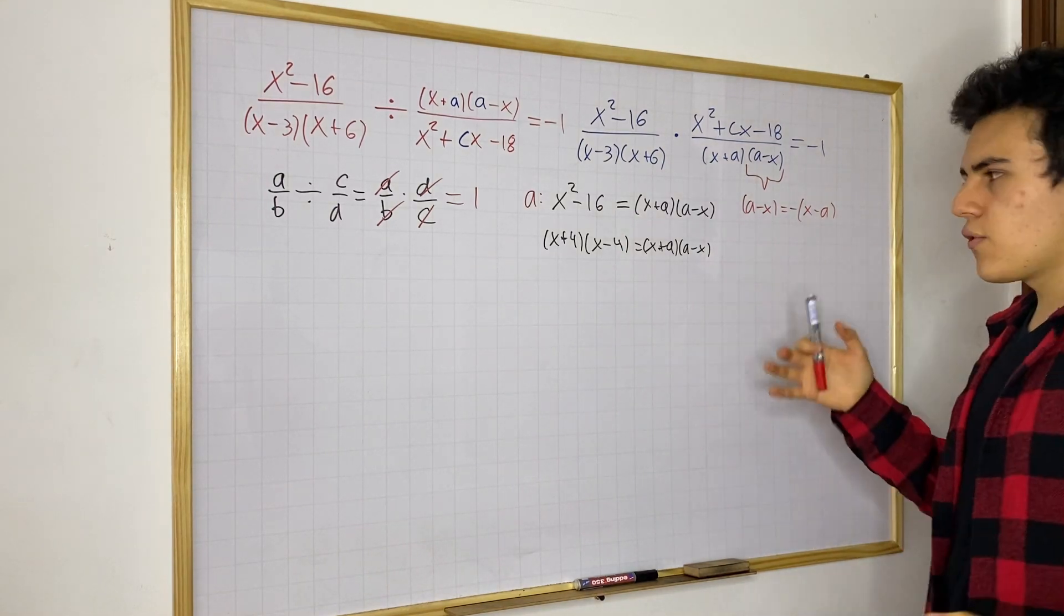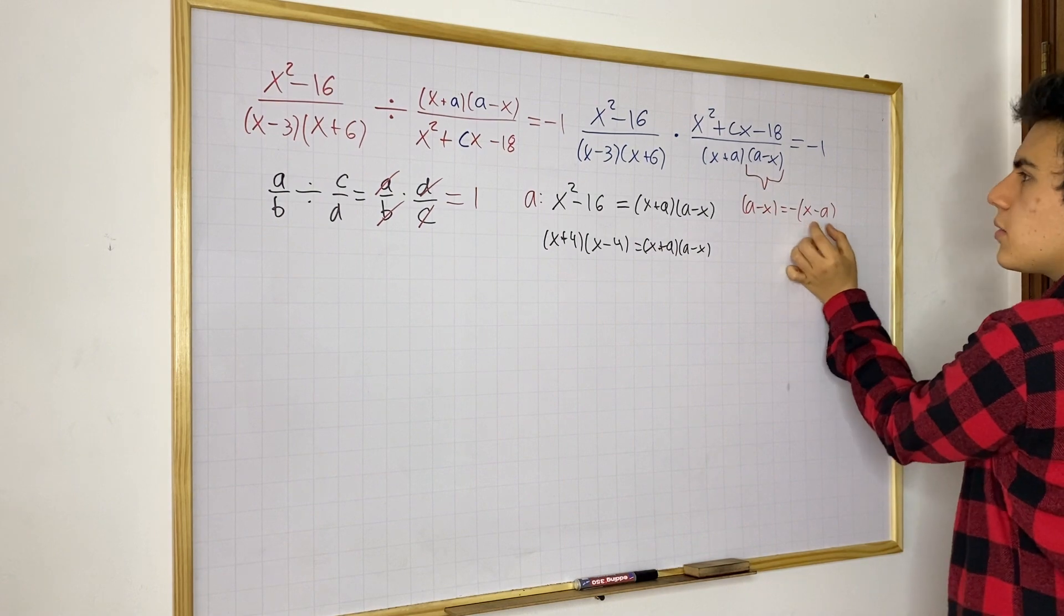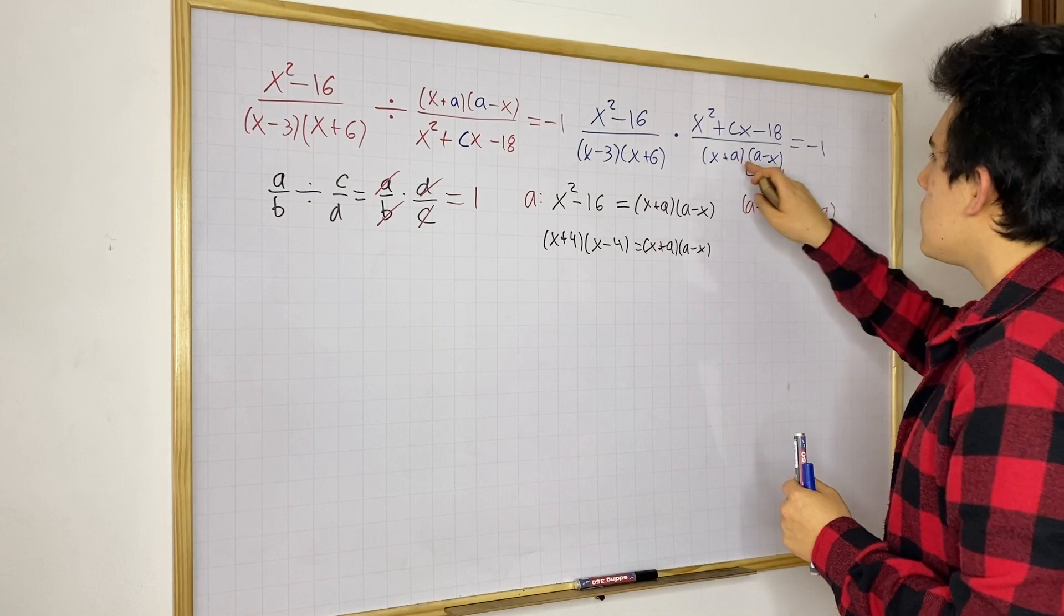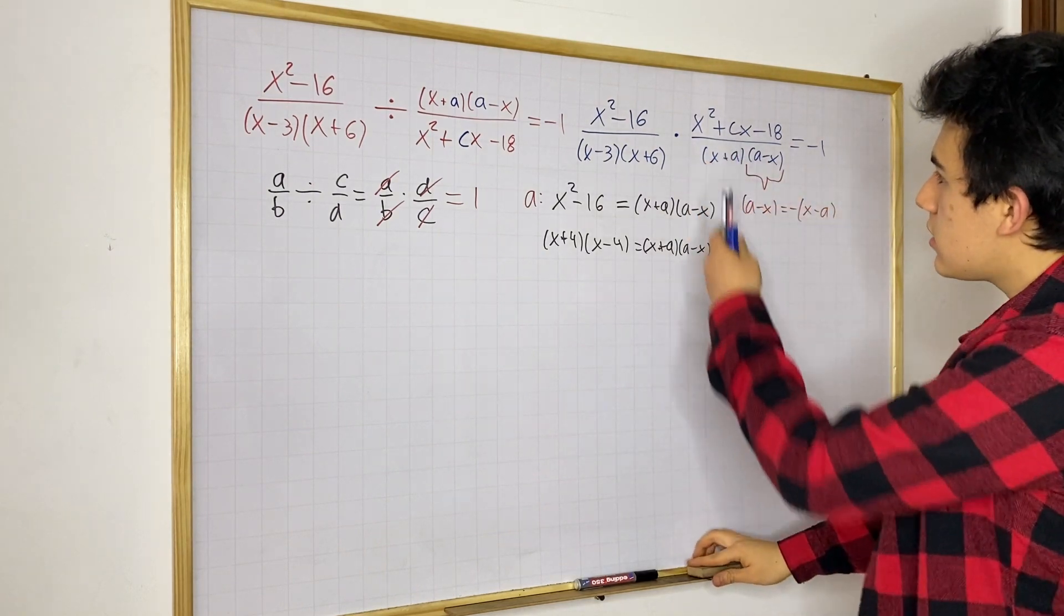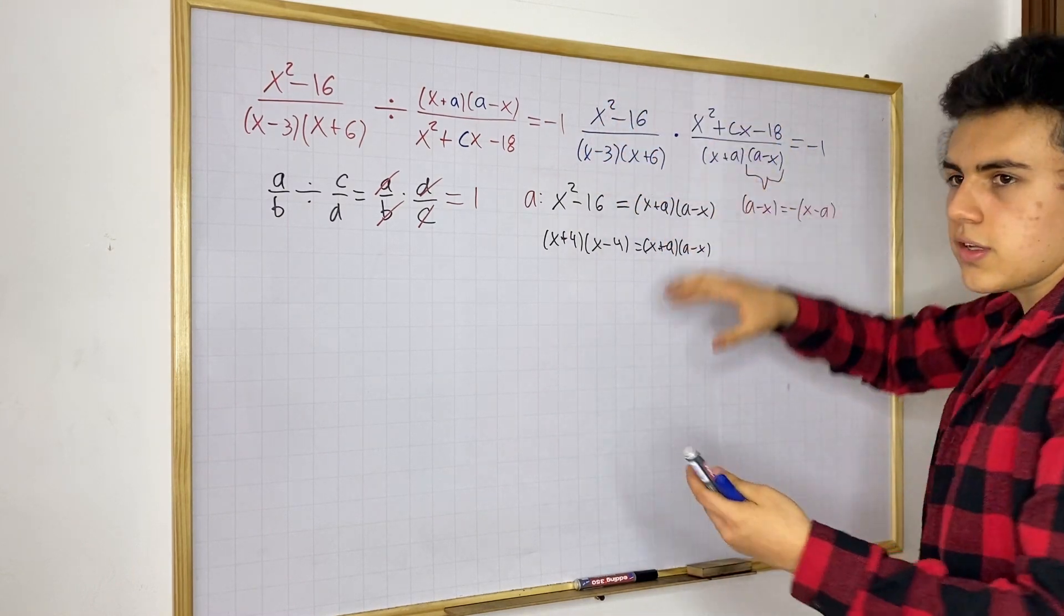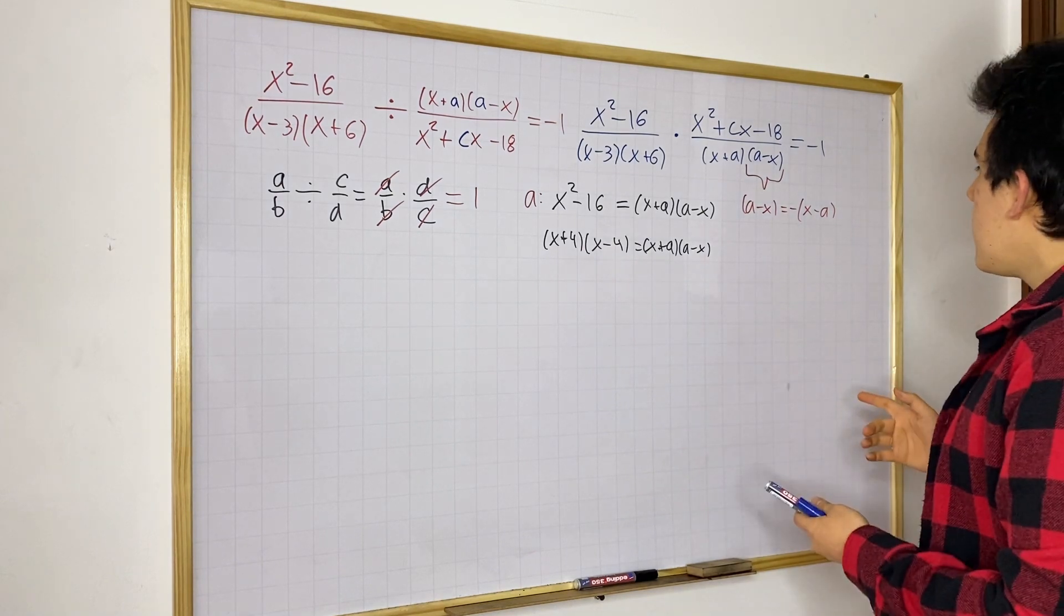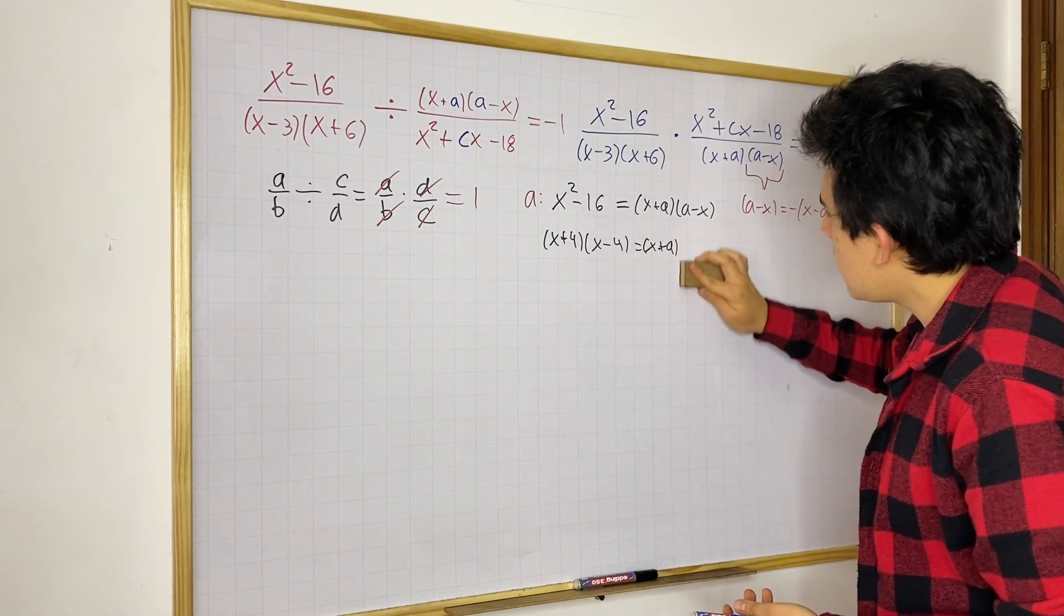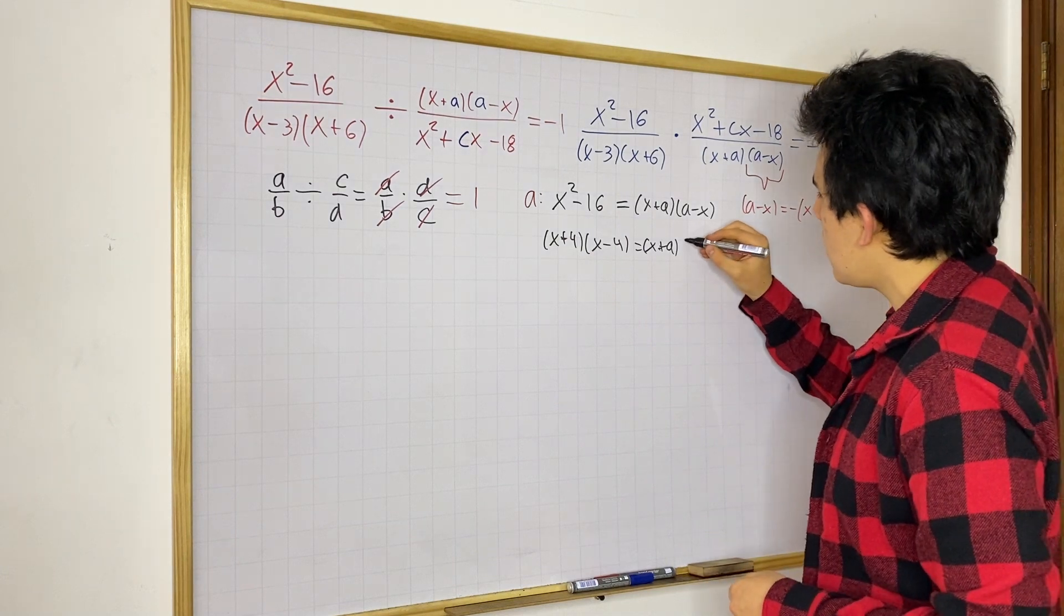And now we have the difference of squares for this X squared minus 16. We have X minus A and X plus A. So, instead of saying that this is equal to this, we could also say that this negative one, we can send it out of these two fractions and say that's just negative one multiplying everything. And then we can just simply take, instead of taking A minus X, we can say that this is X minus A because we took out a negative one.